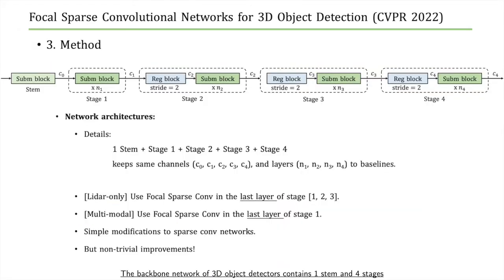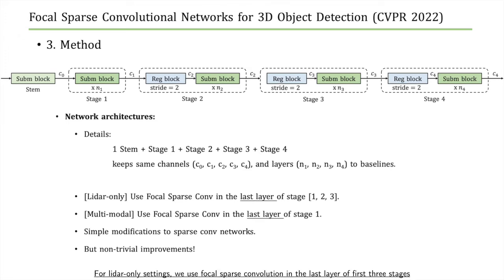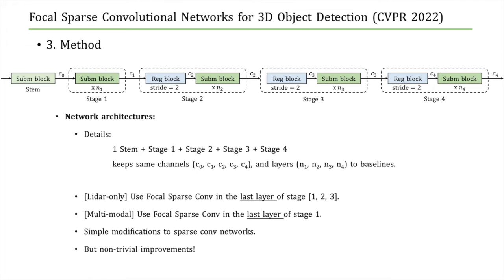The backbone network of 3D object detectors contains one stem and four stages, specified by the channels and layer numbers. We keep these settings the same as baseline models. For LiDAR-only settings, we use focal sparse convolution in the last layer of the first three stages. For multimodal settings, we use focal sparse convolution only in the first stage. These simple modifications bring non-trivial improvements to the sparse convolutional network.